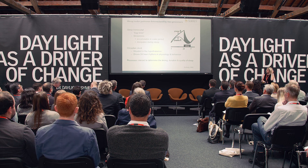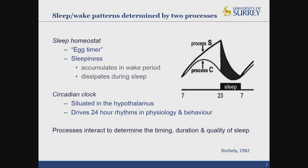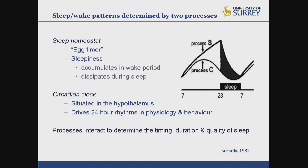Our sleep patterns are determined by two processes within our brain that interact to determine the timing, duration, and quality of our sleep. We have the circadian clock situated in the hypothalamus, which drives 24-hour rhythms. We also have a sleep homeostat, which essentially acts as an egg timer: sleepiness builds up during the day — the longer we're awake, the more sleepiness we have — and then when we fall asleep at night, the sleepiness will dissipate, and the whole process starts again when we wake the next day.